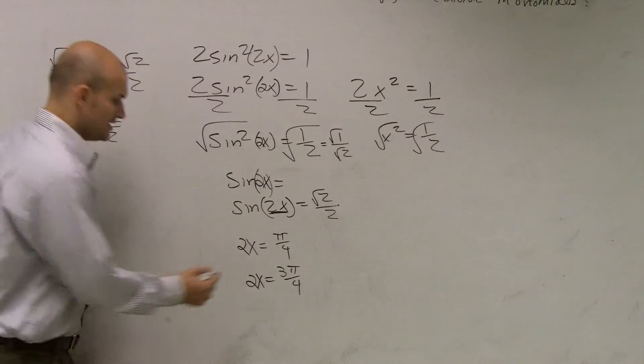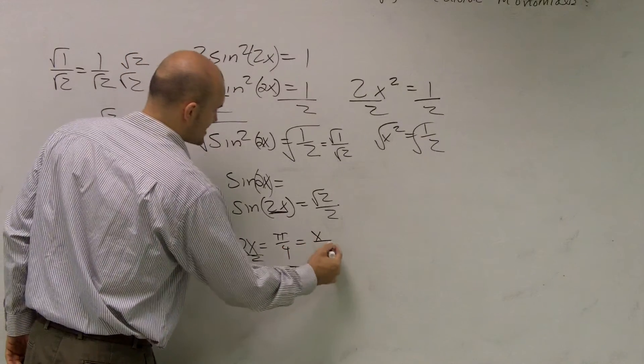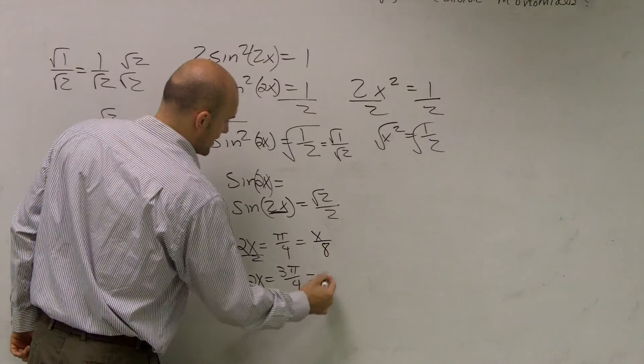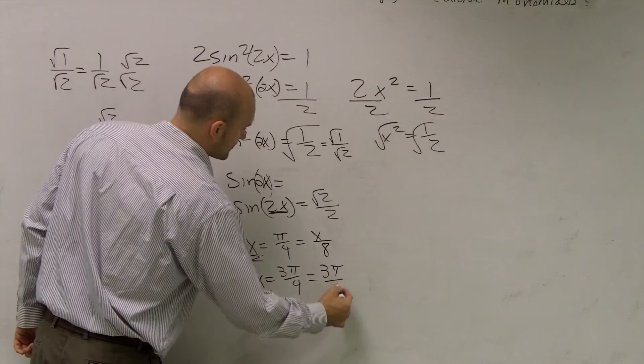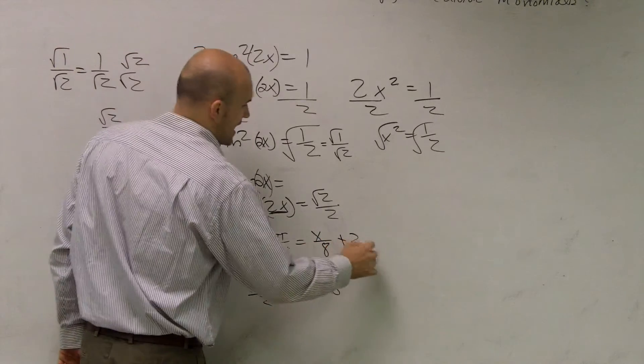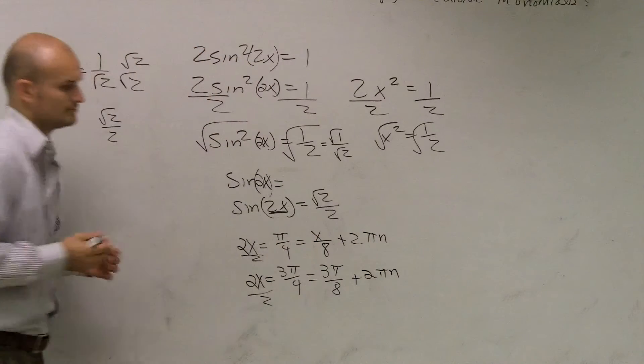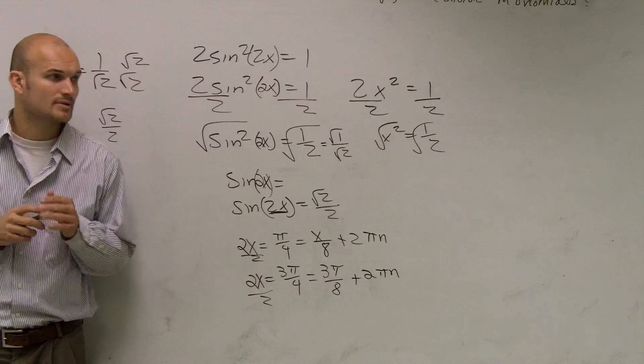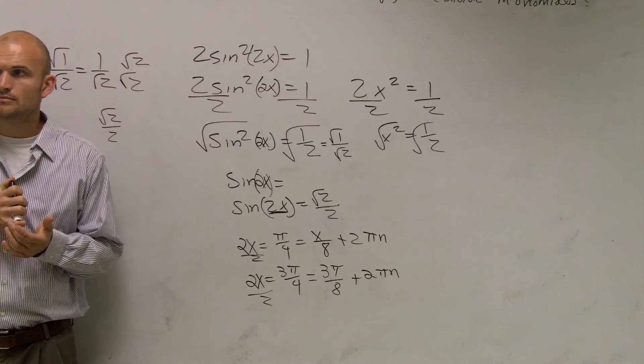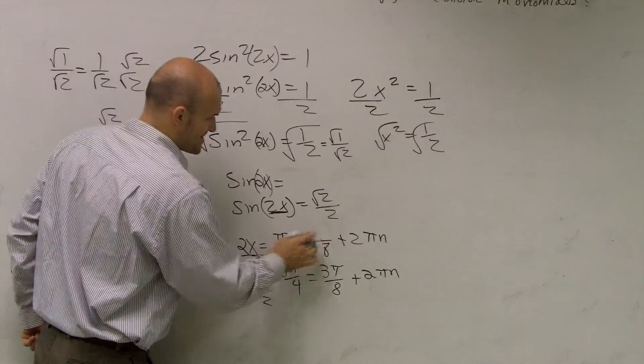So now, you need to divide by 2, and what you'll get is x over 8, and here you get 3 pi over 8. Then, the same thing is going to happen with your solutions. Add 2 pi n plus 2 pi n. You mean pi over 8? Yeah, it's pi. I don't know why I have my x. Thank you.